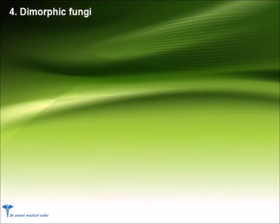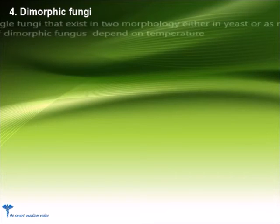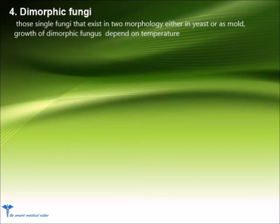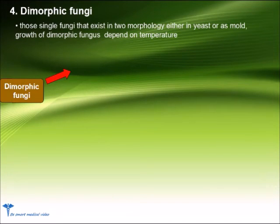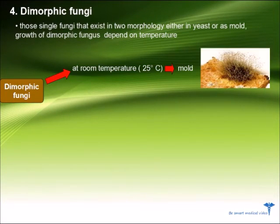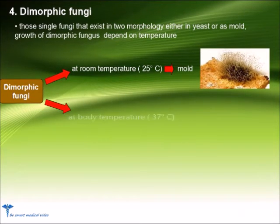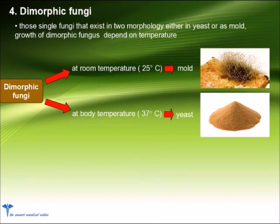Number 4: Dimorphic fungi. Those single fungi that exist in two morphologies, either as yeast or as mold. Growth of dimorphic fungi depends on temperature. At room temperature, this fungus grows in mold form. At body temperature, this fungus grows in yeast form.